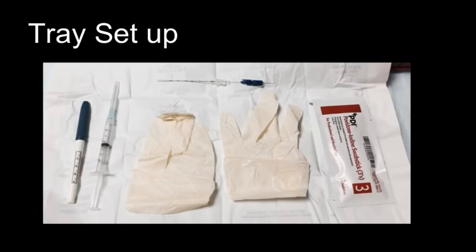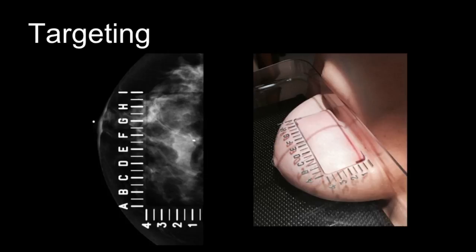Now that you understand how to determine the approach and needle length, it is time to set up the tray. You will need a pair of sterile gloves, numbing medication, a marker to mark the skin during the time out, the appropriate needle wire apparatus, and cleaning solution — in this case, Betadyne. We will now move on to the procedure itself.